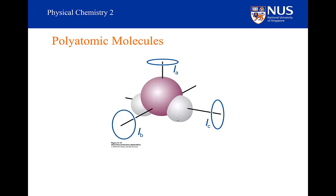I have labeled these rotational axes A, B, and C. Thus I have labeled the associated moments of inertia around these axes as I sub A, I sub B, and I sub C. I will be describing how we choose which one is A, which one is B, and which one is C in a little while.